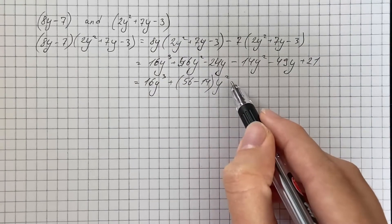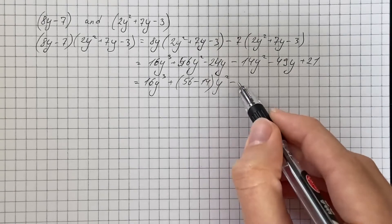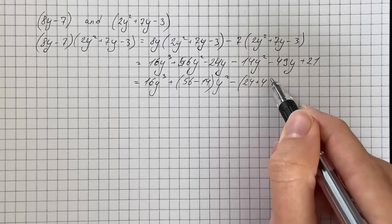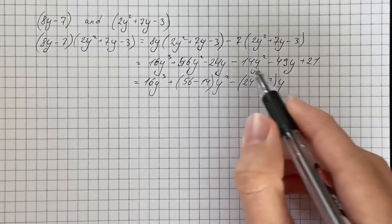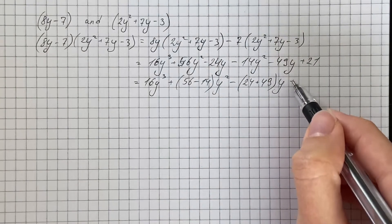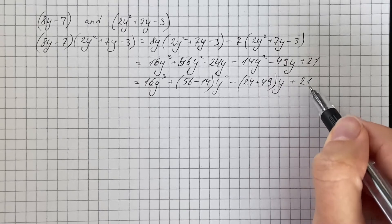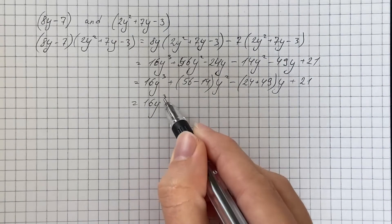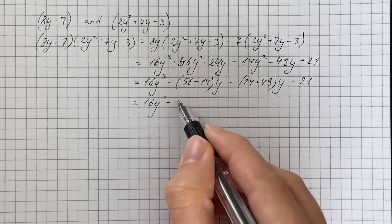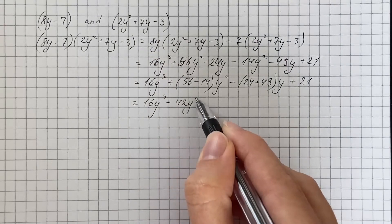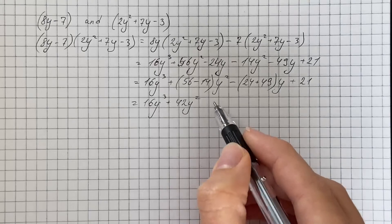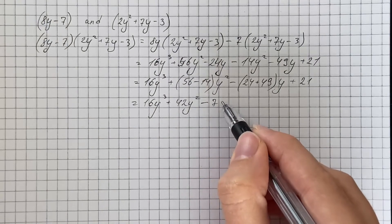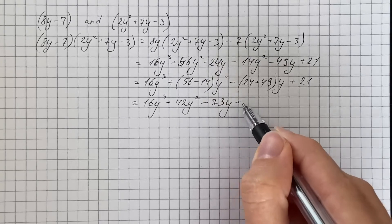Then minus 24 plus 49 times y and plus constant 21. Therefore we get 16y cubed plus 42y squared and minus 73y and plus 21.